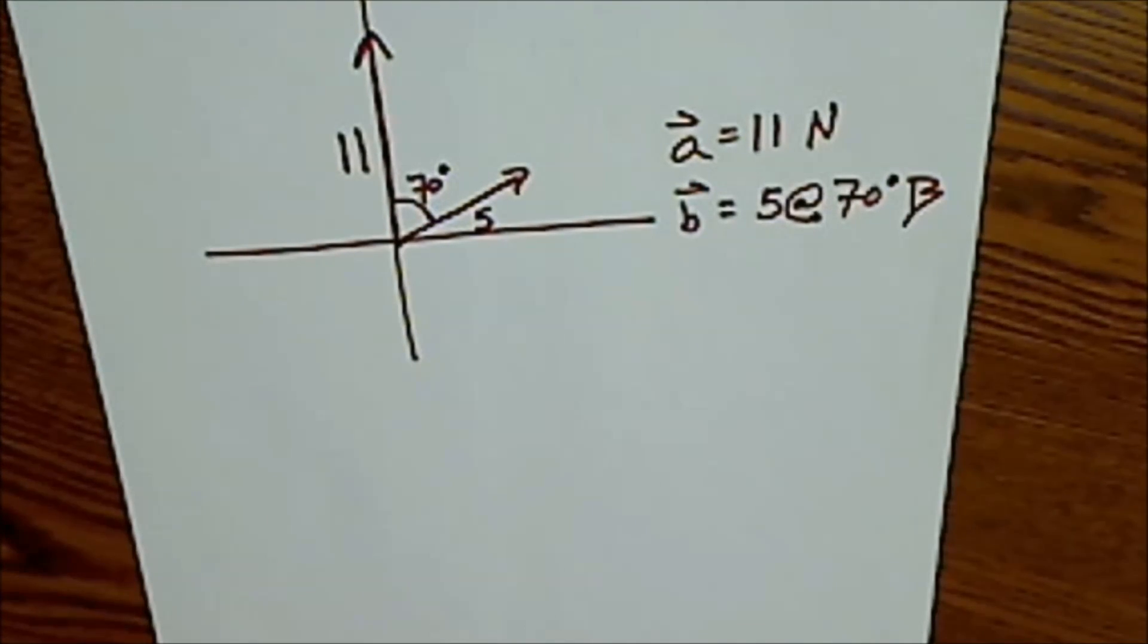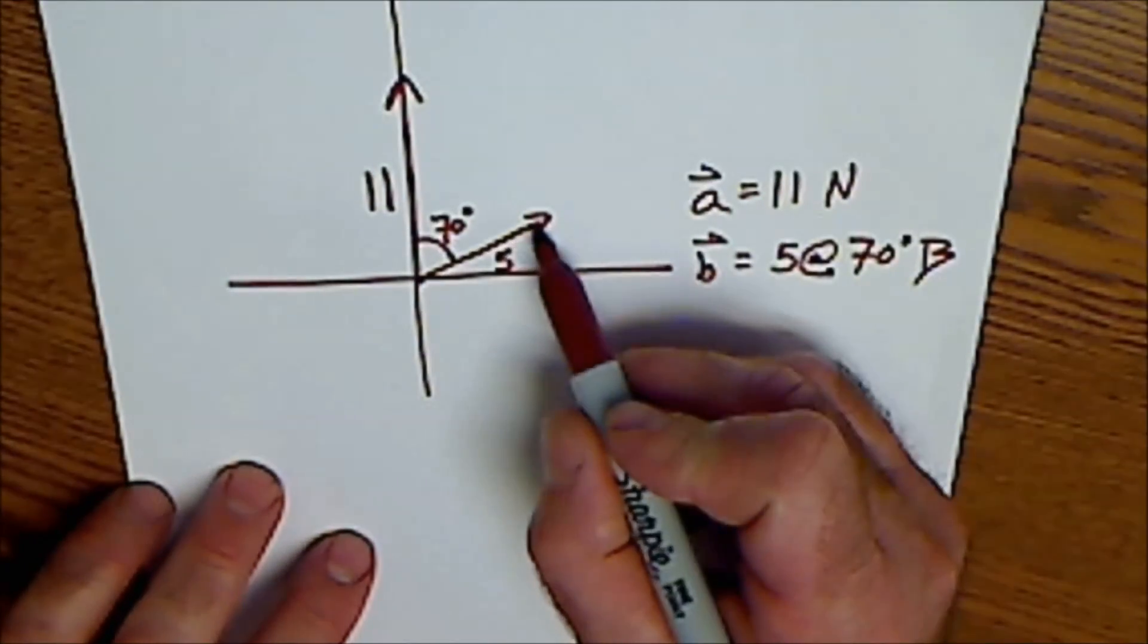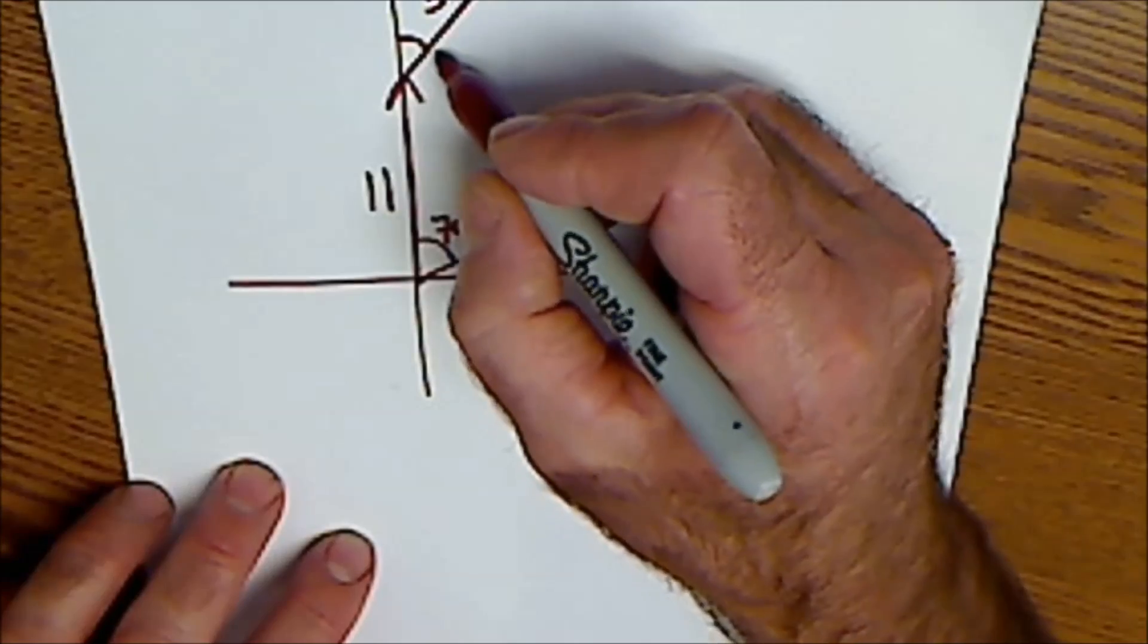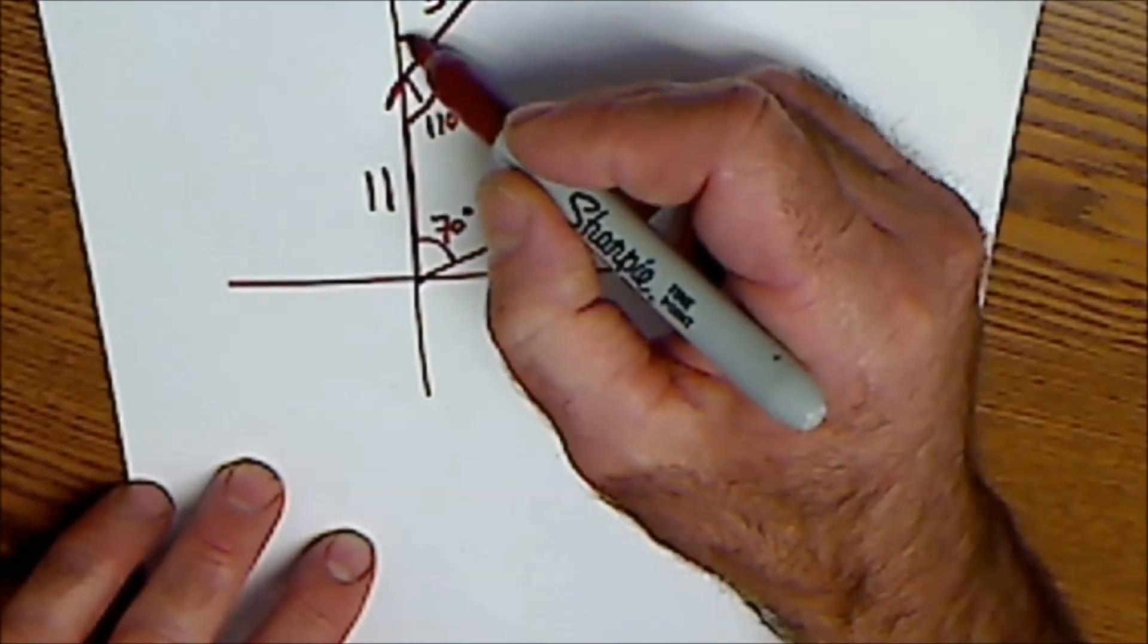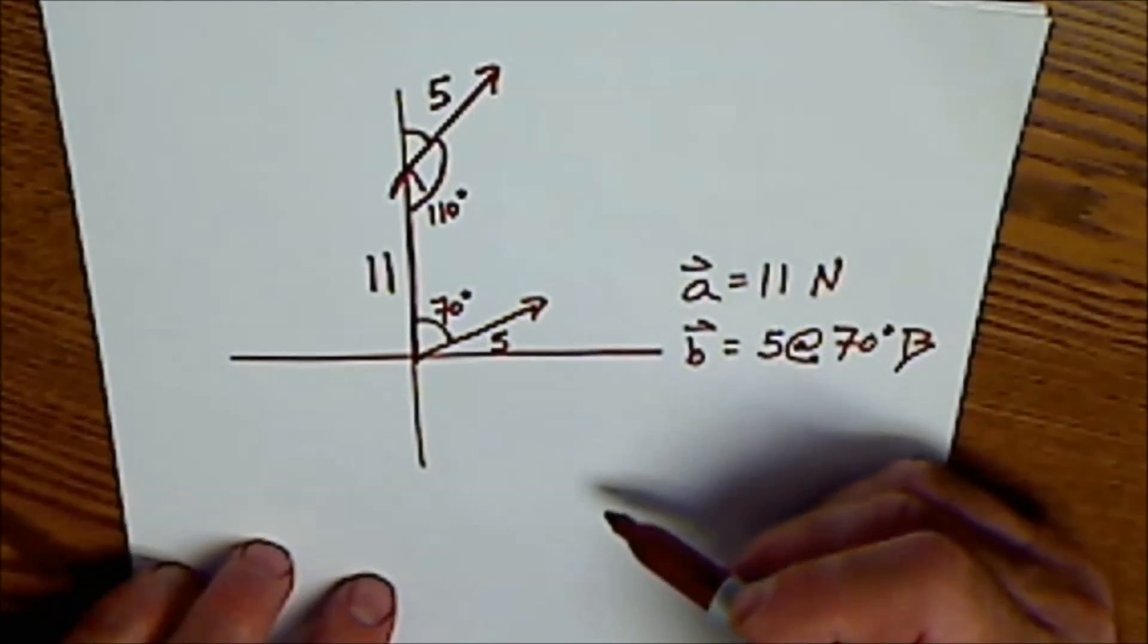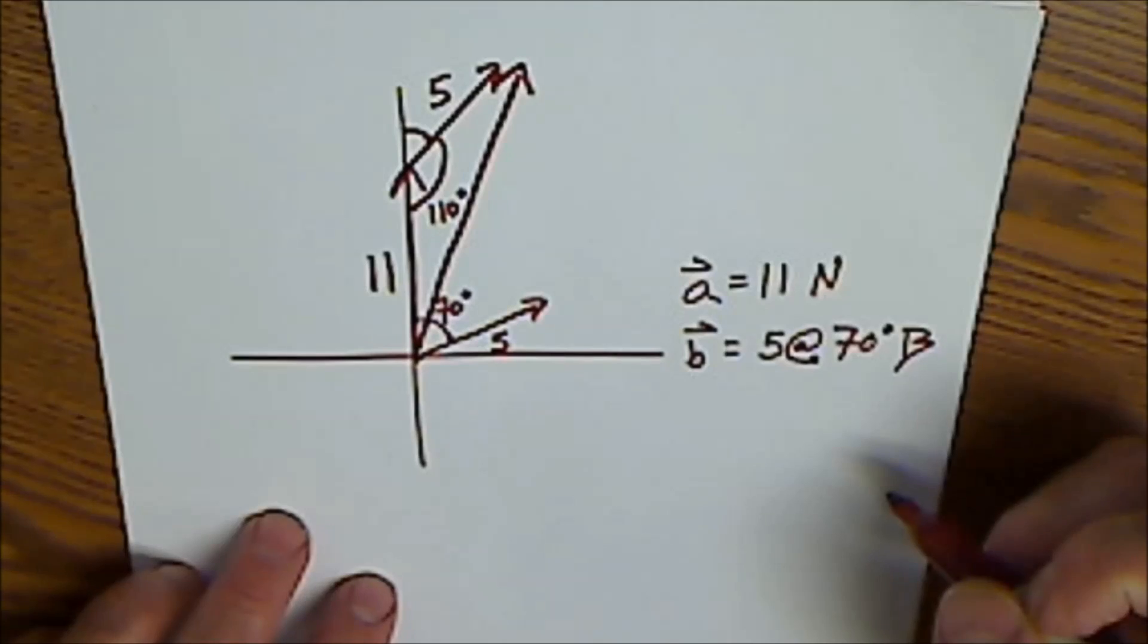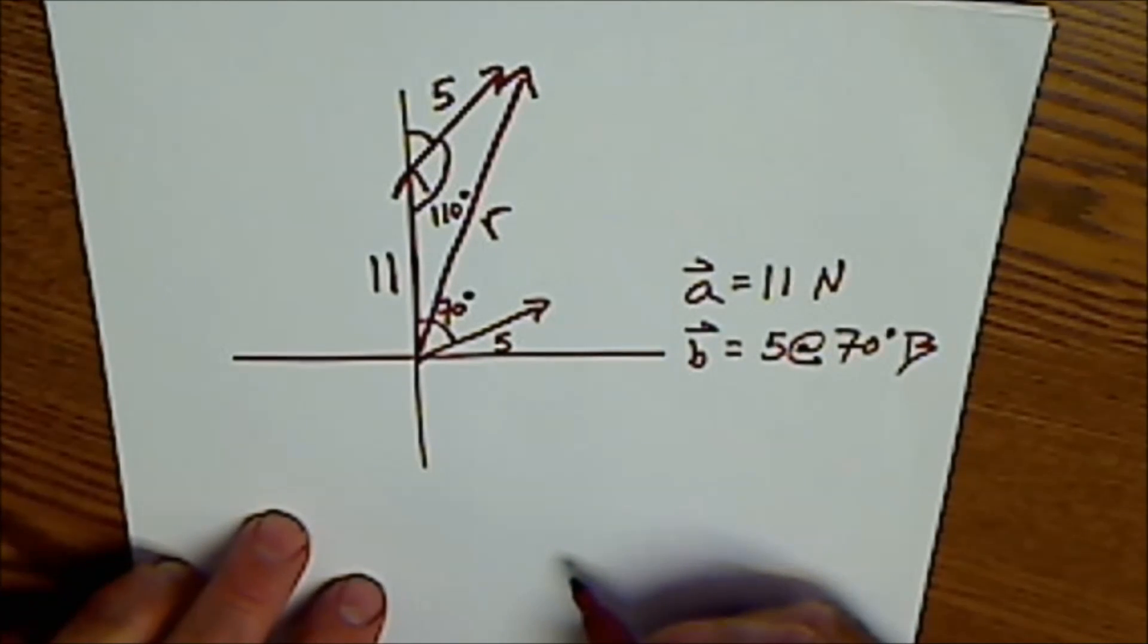And then I'm going to add these two vectors together with the tail-to-tip method. So I transpose vector B up here. It's 5 units long. If this is 70, this interior angle is 110 degrees. It's a supplement of 70. Then my resultant vector goes from the tail of the first to the tip of the second. And I'm going to call that R for resultant, meaning I'm going to add the two together.